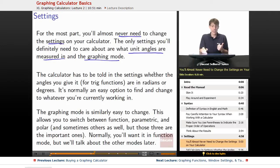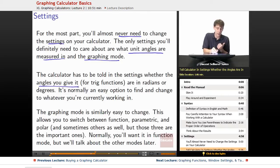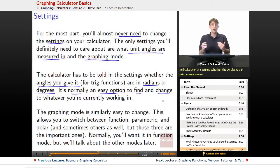So the calculator has to be told in the settings about angles. It has to be told whether the angles that you're working with, the angles you're giving it, and this is for trig functions, are in radians or in degrees. If it's in the wrong one, if you mean to do your problem in radians, but you accidentally have it set in degrees, you're going to get completely wrong answers. So it's really important that you know which one it's in and that you have it set in the correct one. It's normally a pretty easy option to find and change whenever you need to.